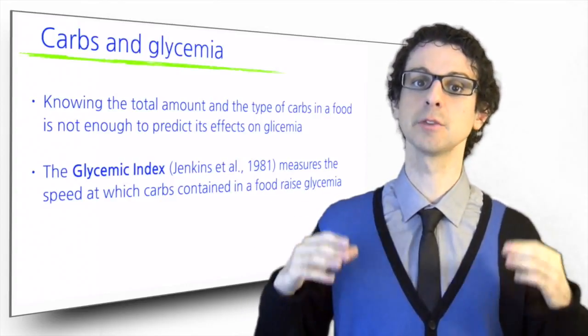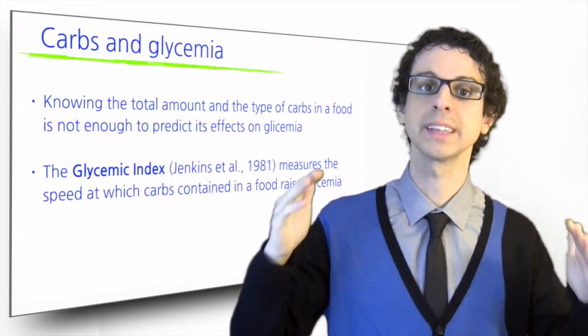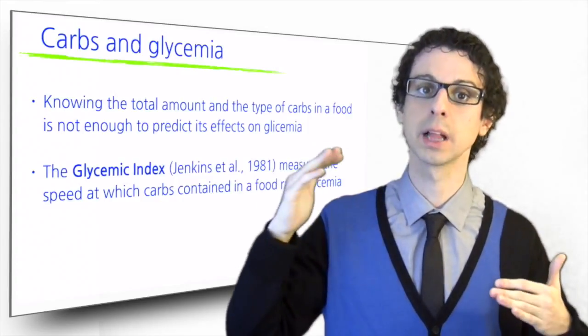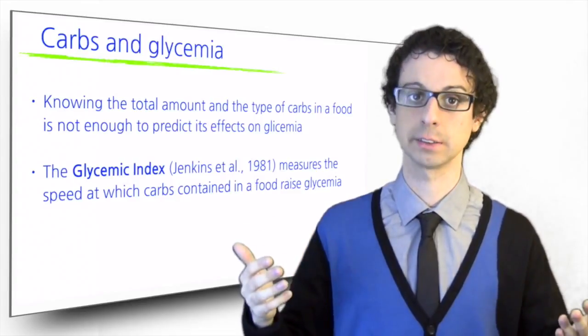The higher the glycemic index of a food, the faster its carbs entered the bloodstream and raised blood glucose, causing the pancreas to release insulin.